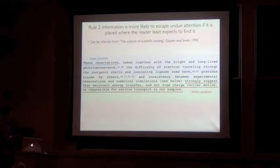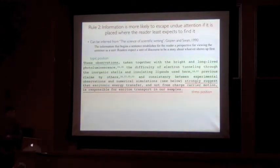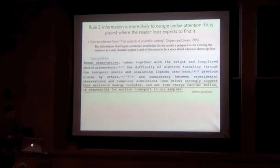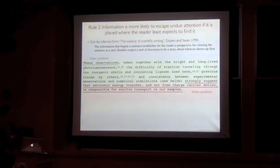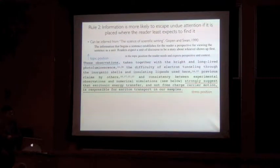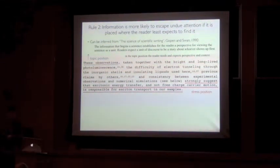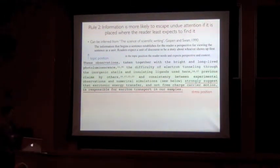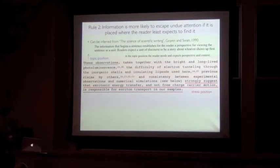The other end of the sentence, we have the topic position. So this establishes for the reader a perspective for viewing the sentence as a unit. Readers expect a unit of discourse to be a story about whoever shows up first. The topic position also has an important role in terms of linking back to previous material. So it should usually contain some old or familiar information to establish context.